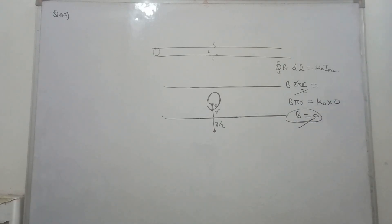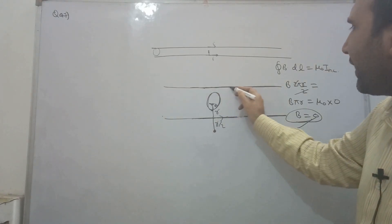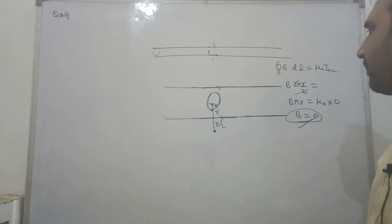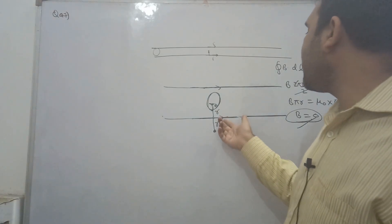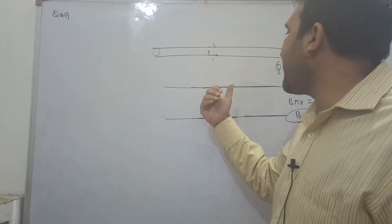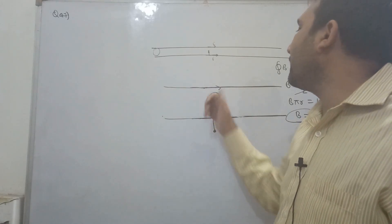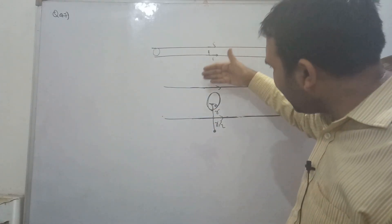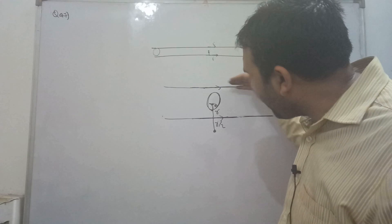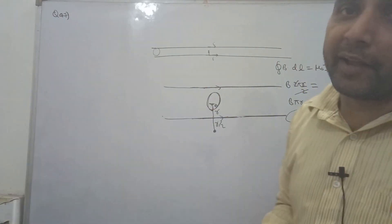Basically using symmetry we can determine the magnetic field. This is a wire.